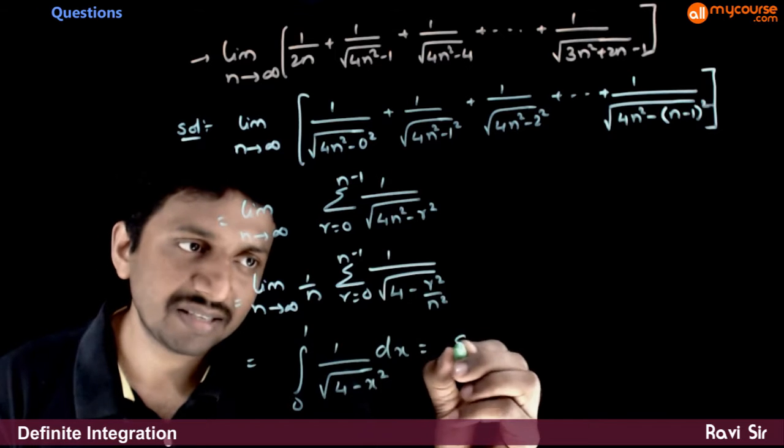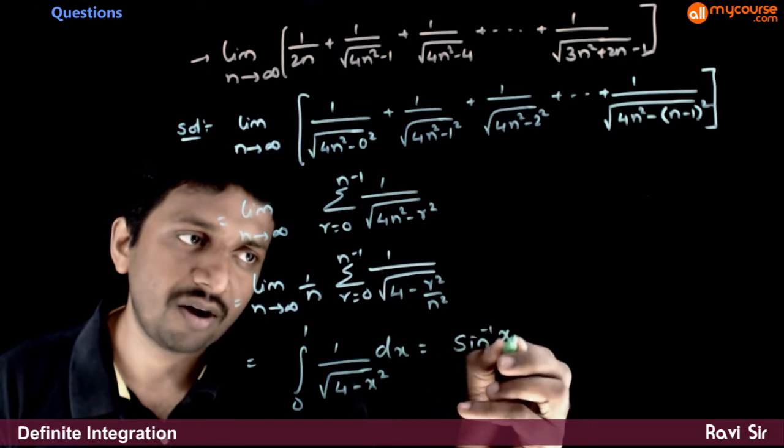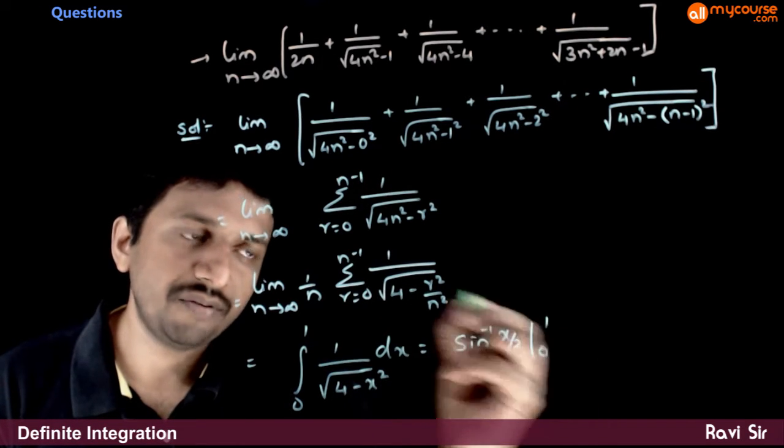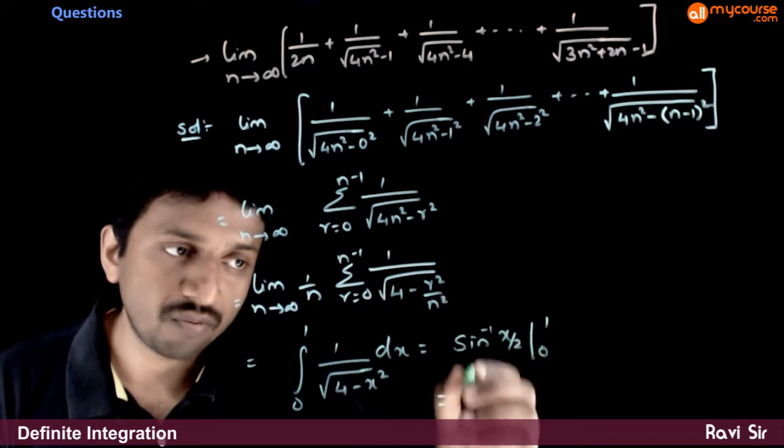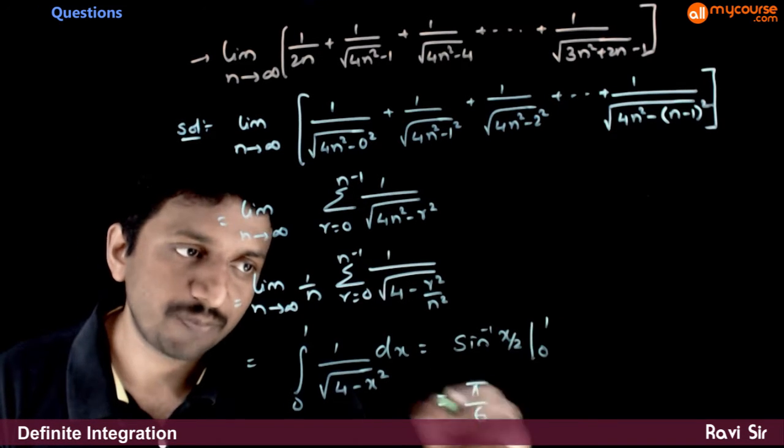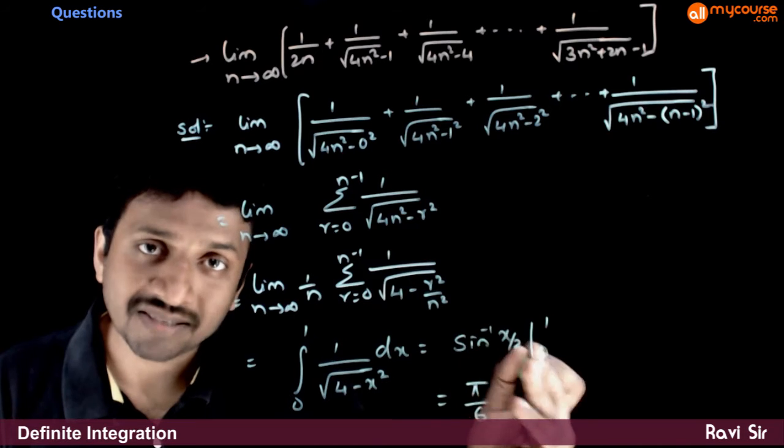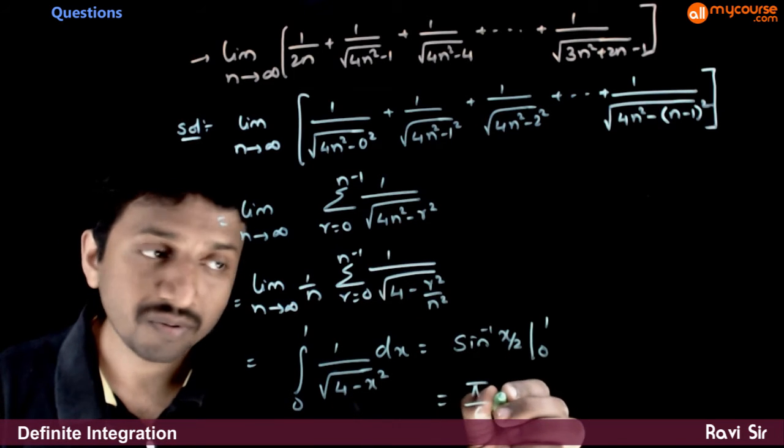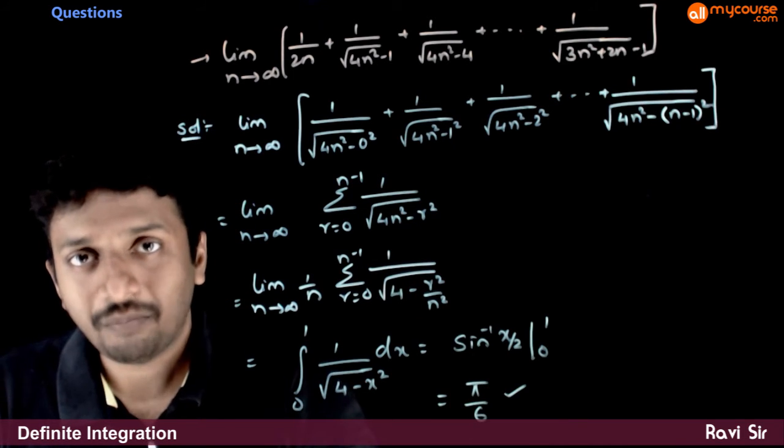What is the integration of this? Sin inverse of x by 2 going from 0 to 1. That is equal to sin inverse of 1 by 2 which is pi by 6 minus sin inverse of 0 is 0. The answer is pi by 6.